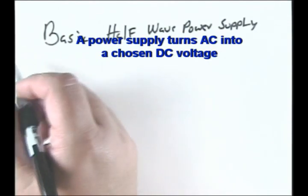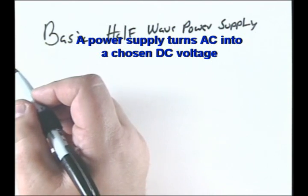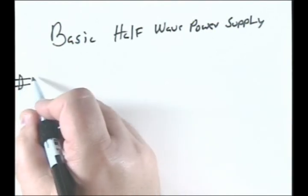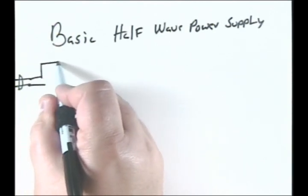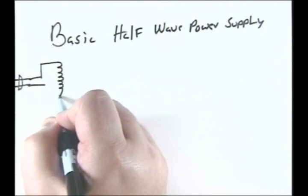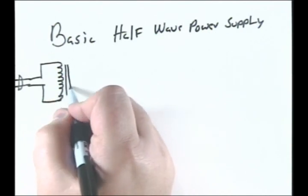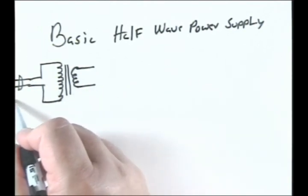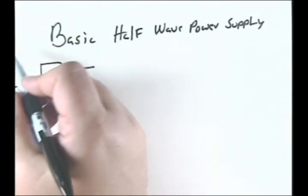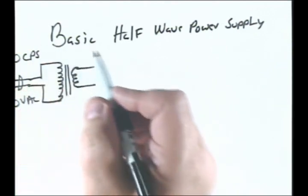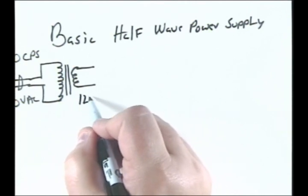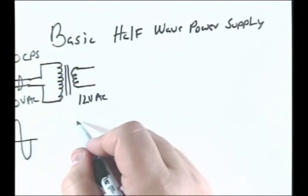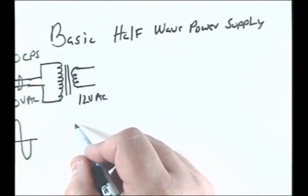The purpose of a power supply is to turn AC into DC and drop the voltage to a usable level for a device that doesn't require a full 110 volts. Starting from the wall plug, we go to a transformer with an iron core. The primary has more windings at 110 volts AC, 60 cycles per second. The secondary has fewer windings, stepping the voltage down to 12 volts AC. The waveform amplitude drops accordingly through the transformer.